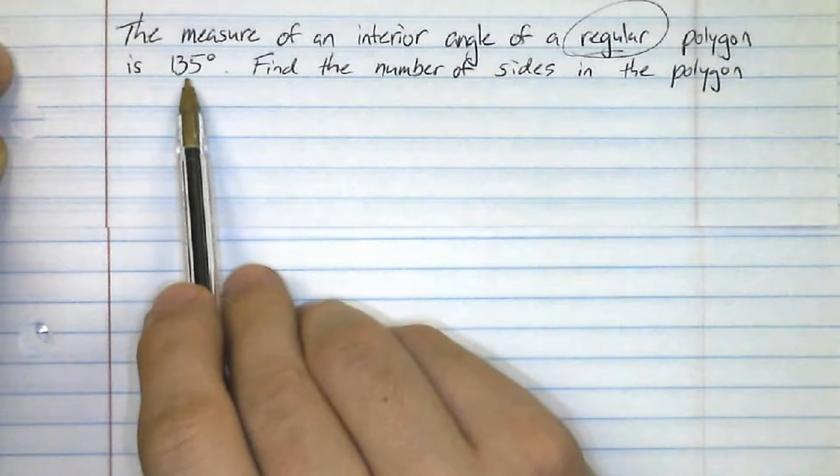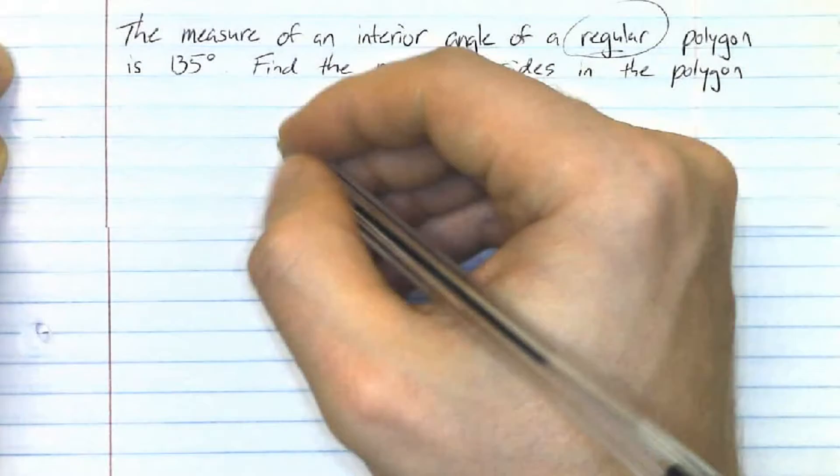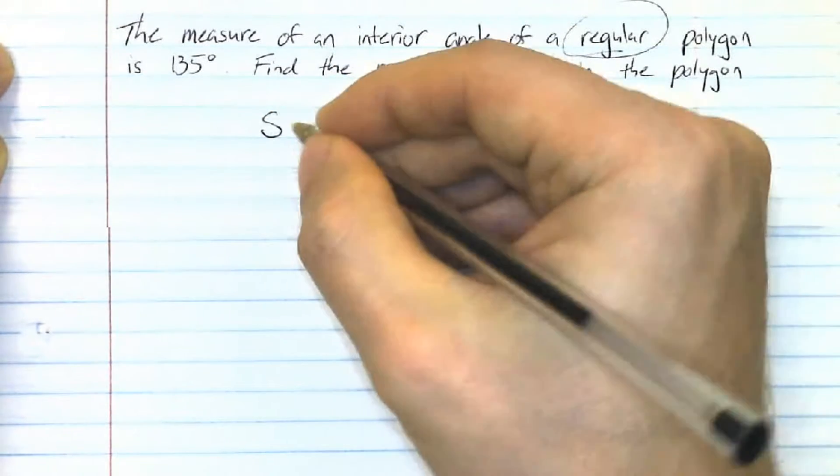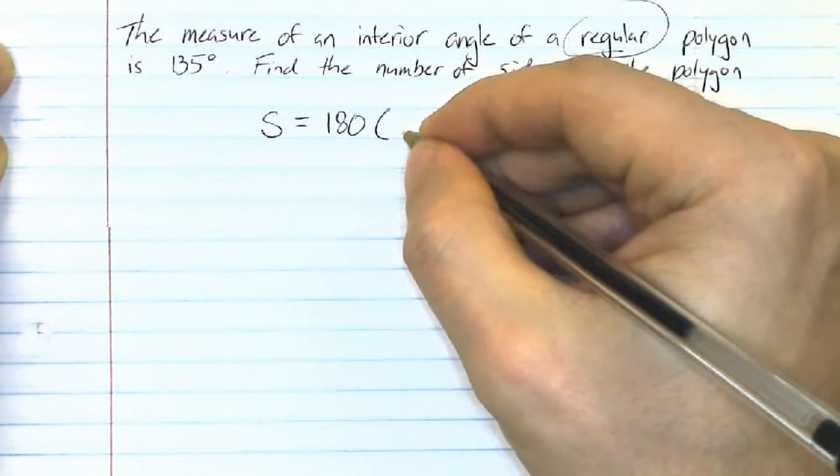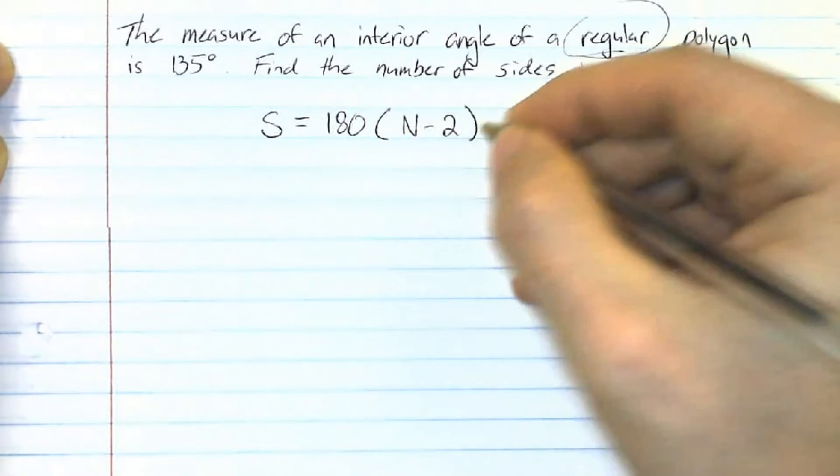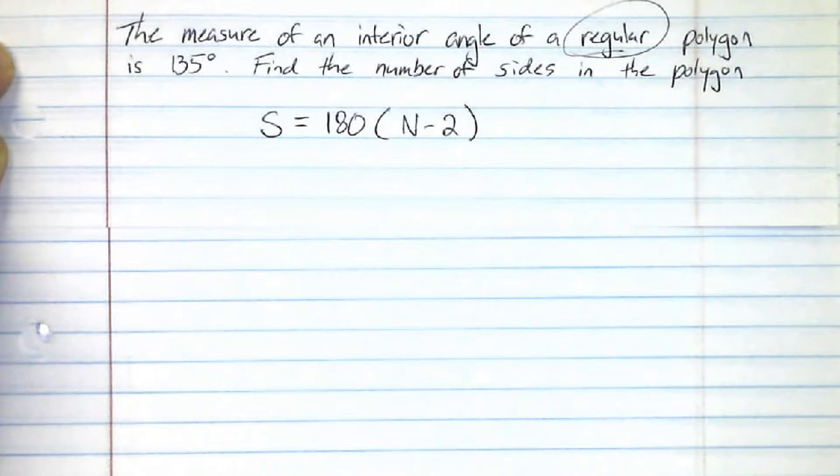So we're being told the angle is 135 degrees. So let's go to the formula that we've been using. S equals 180 times the number of sides minus 2. Now, S, that stands for the sum of the interior angles.